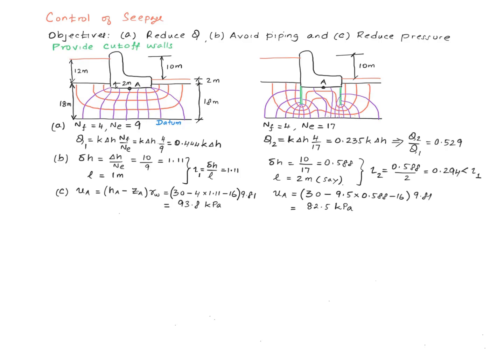Here I have done some calculations with and without cut-off walls for the same problem. For this flow net, the number of flow channels works out to be 4 and number of equipotential drops works out to be 9. Here, for the same number of flow channels, number of equipotential drops have increased to 17 from 9. This is the fundamental difference between the two.